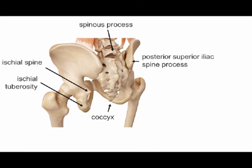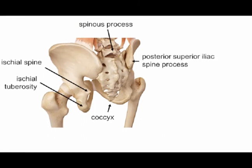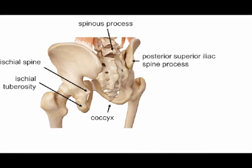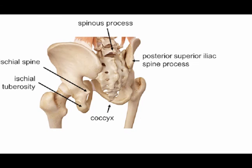Functionally, a tripod is formed by the bilateral ischial tuberosities and the coccyx. This tripod supports weight-bearing in a seated position.